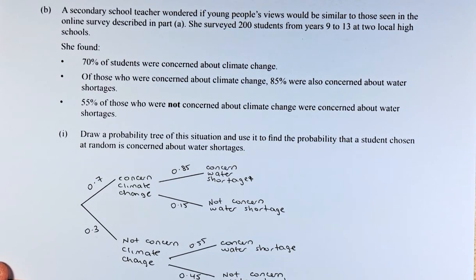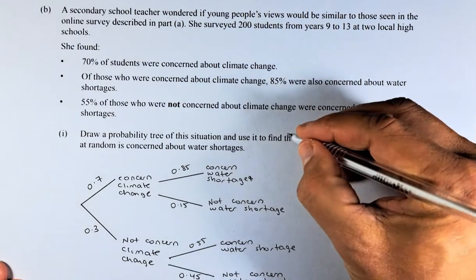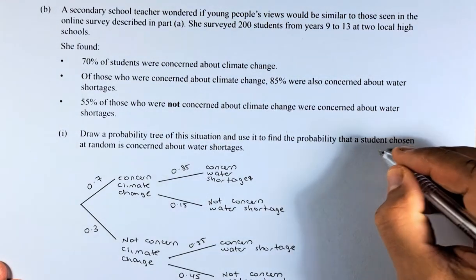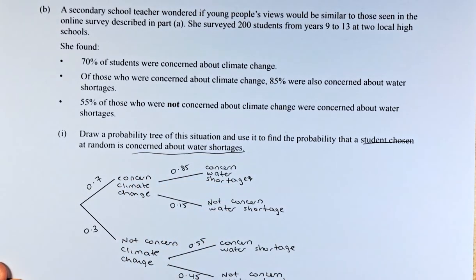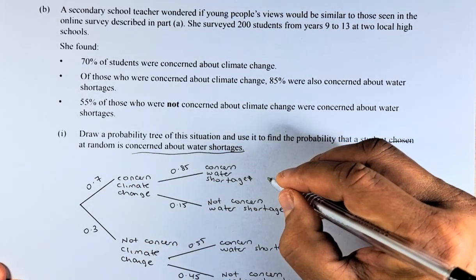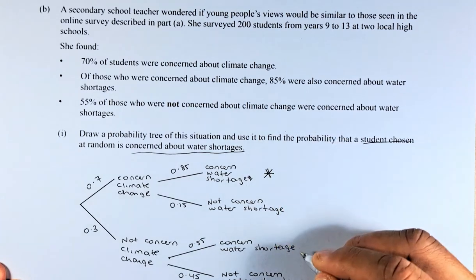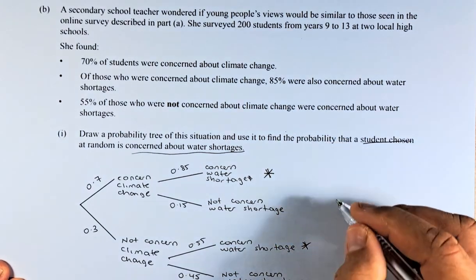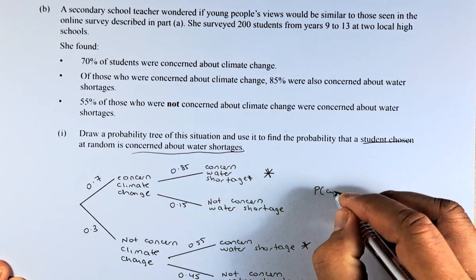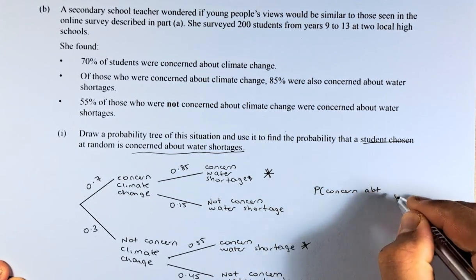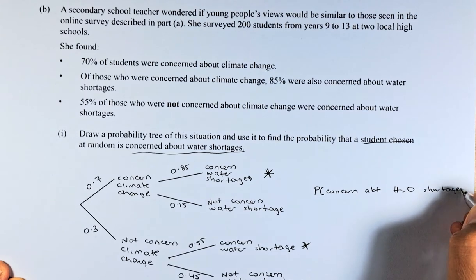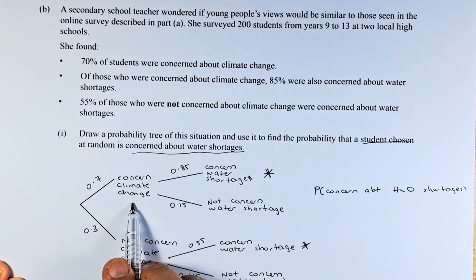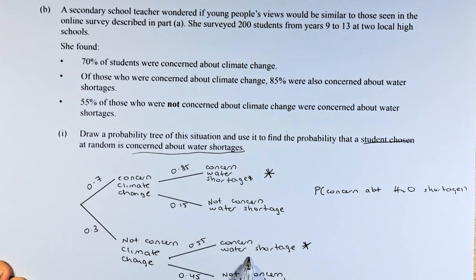The trick is to draw a probability tree of this situation and use it to find the probability that a student chosen is concerned about water shortage. There are two possibilities for concern about water shortage. The probability of being concerned about water shortages could either be: concerned about climate change and concerned about water shortages, or not concerned about climate change but concerned about water shortages.